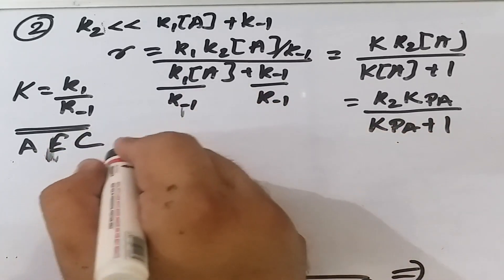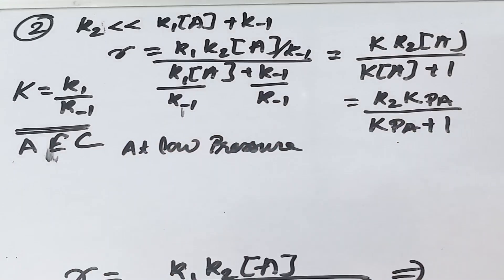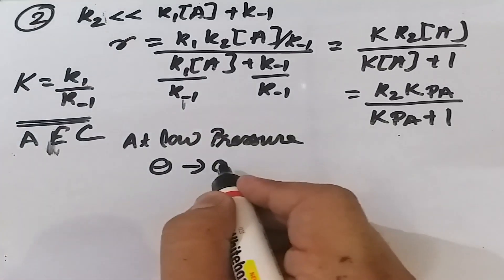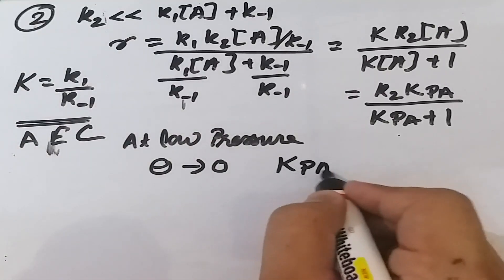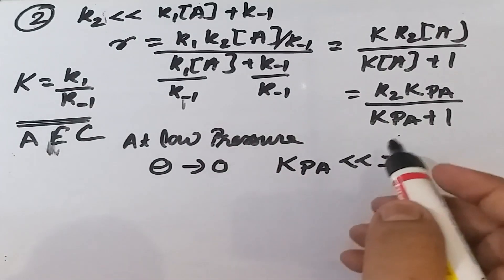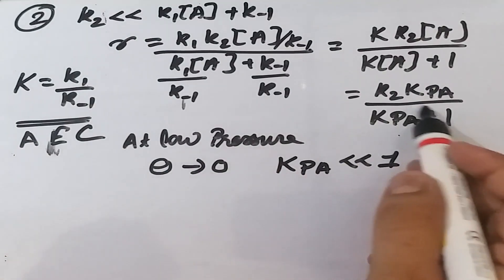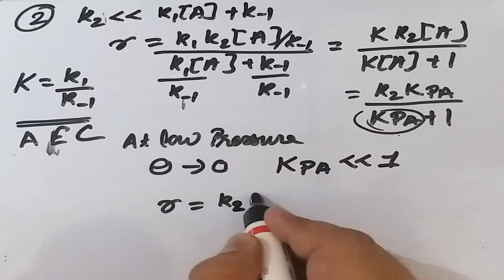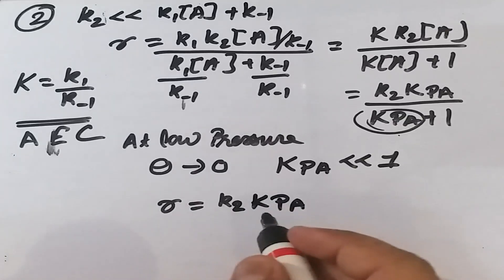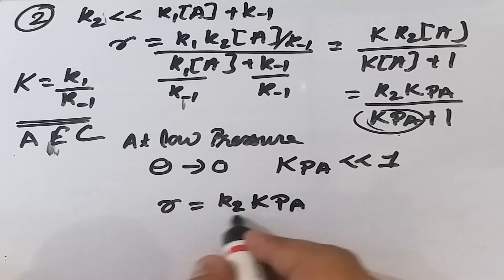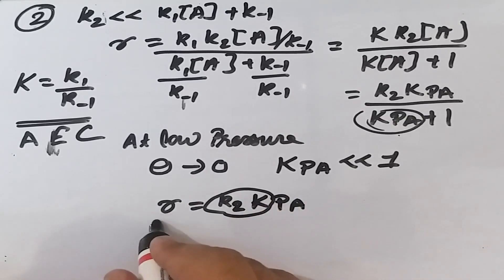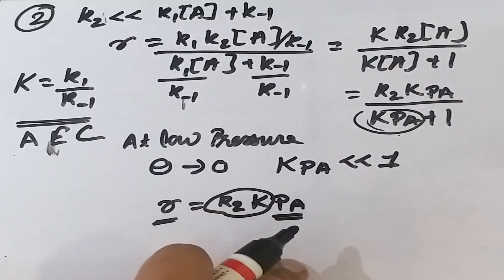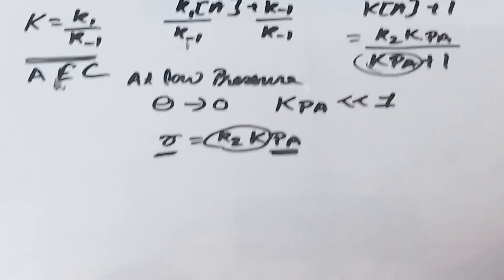Two sub-cases arise depending on pressure. At low pressure, θ ≈ 0 and Kpₐ << 1, so the denominator ≈ 1 and r ≈ k₂Kpₐ. Thus at low pressure, the rate is first order with respect to the concentration of reactant A.